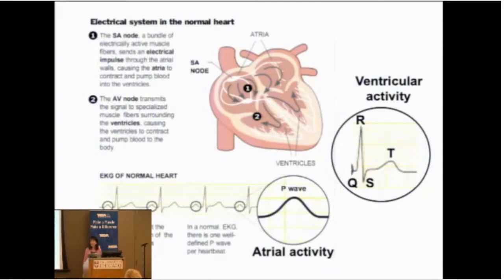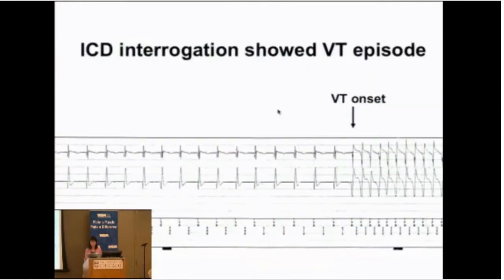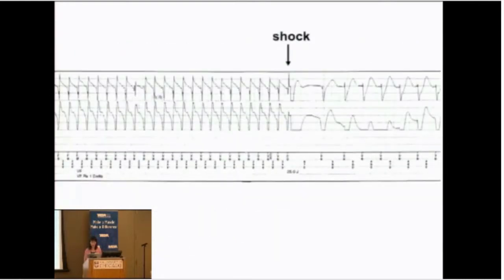We can put in devices known as defibrillators. The electrical system of the heart starts at the SA node, travels down to the AV node, then to the main pumping chambers, the ventricles. This is what ventricular tachycardia looks like — it actually came from his device, because he did receive a defibrillator. Here the heart is beating along normally, then ventricular tachycardia starts — the heart beating very fast, too fast to actually fill and provide the needs of the body. The device senses the ventricular tachycardia, delivers a shock, and the heart goes right back to normal rhythm. This is a life-saving event.